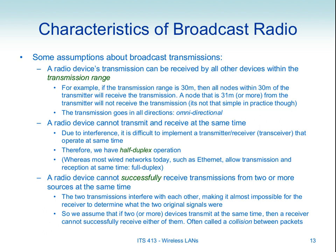Another assumption is that a device cannot transmit and receive at the same time — half-duplex operation. You can transmit or receive, but not both simultaneously. This is because implementing a full transceiver that does both is very difficult: when transmitting, you're sending energy that would interfere with your own receiver. So most wireless devices operate in half-duplex mode.